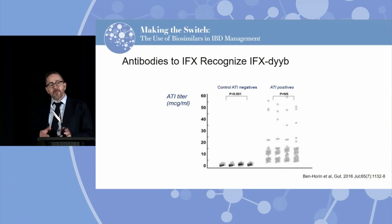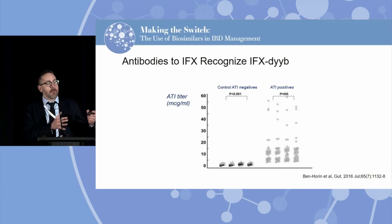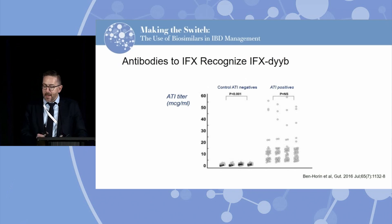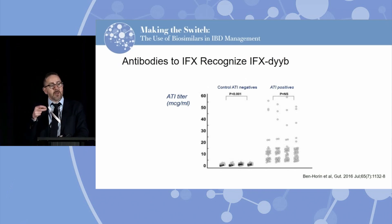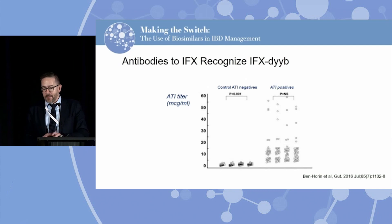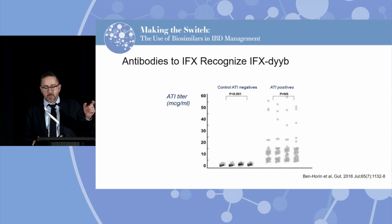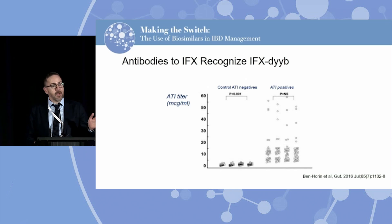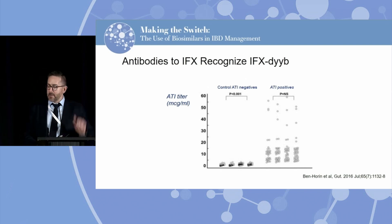One question that always comes up: if this is highly similar to Remicade, would an antibody to Remicade bind to one of these biosimilars? The answer from a nice study from an Israeli group is yes — if you have antibodies to Remicade, those antibodies will also recognize a biosimilar version of Remicade. Looking at ATI samples, patients who have antibodies to infliximab can recognize a biosimilar version of infliximab. So if you've got a patient with demonstrated ATIs to Remicade, putting them on a biosimilar version is totally pointless because the same antibodies will recognize the biosimilar.